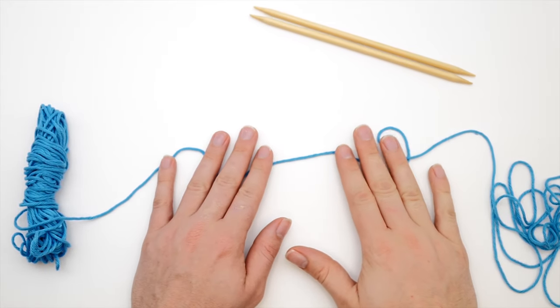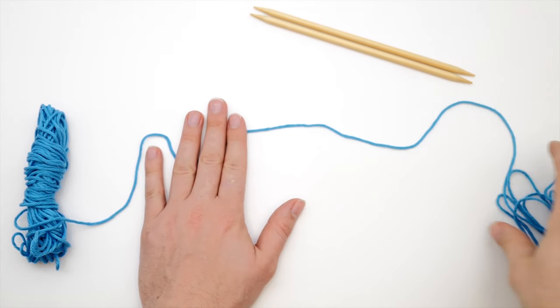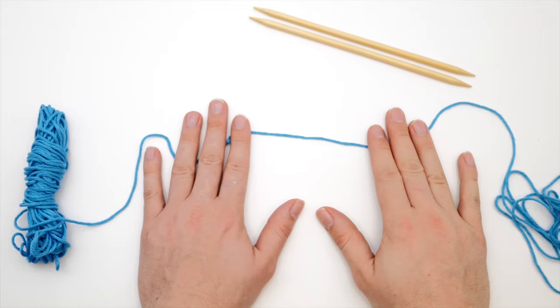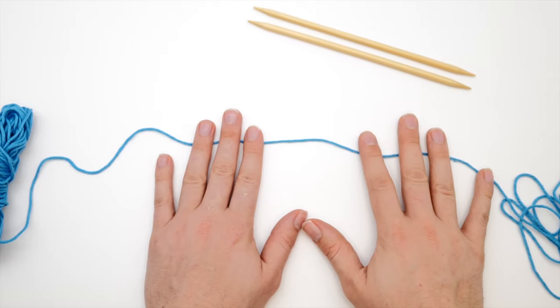Let's show you how the long tail cast on is done. First, you need to set aside a little tail because we're going to cast on these stitches from the tail. Be generous about this tail. You can always cut any excess later on.